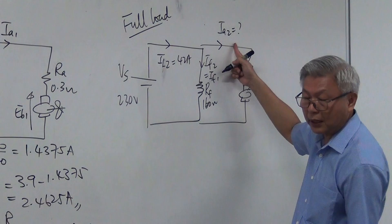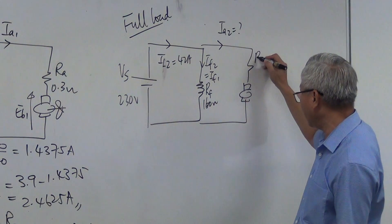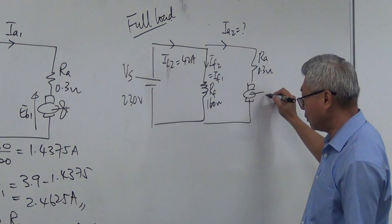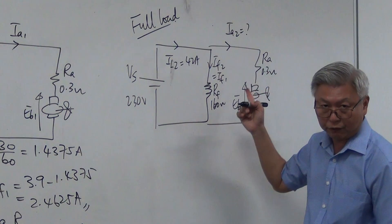Ia2, if you don't know what it is, it should be this minus this to give me Ia2. And Ra is still the same, 0.3 ohm. And this motor here, Eb should not be the same anymore because Ia is different.